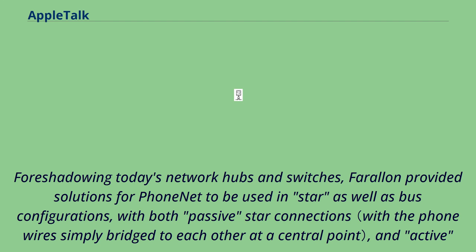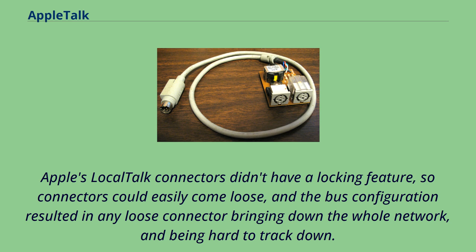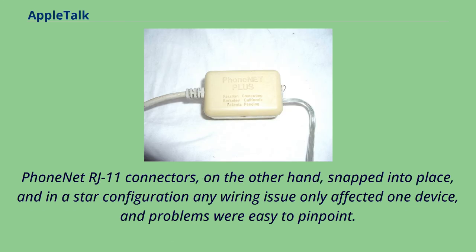Apple's LocalTalk connectors didn't have a locking feature, so connectors could easily come loose, and the bus configuration resulted in any loose connector bringing down the whole network and being hard to track down. PhoneNet RJ11 connectors, on the other hand, snapped into place, and in a star configuration any wiring issue only affected one device and problems were easy to pinpoint. PhoneNet's low cost, flexibility, and easy troubleshooting resulted in it being the dominant choice for Mac networks into the early 1990s.